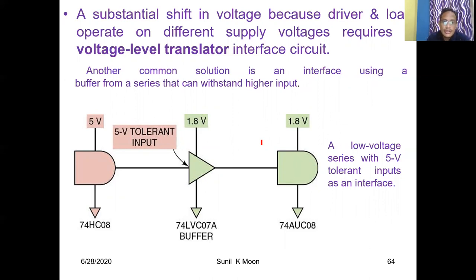This is the end of unit number one — study of different types of logical families. In this unit, we defined TTL logic family, CMOS logic family, how to design two-input TTL NAND gate, two-input CMOS NAND gate, and CMOS NOR gate. Parameters covered include fan-in, fan-out, voltage and current parameters, figure of merit, noise margin, propagation delay, and operating temperature. We also covered the Schottky transistor, which plays a very important role, and interfacing — what it means, how to perform it, how TTL gate drives CMOS gate, and how CMOS gate drives TTL gate. Thank you.